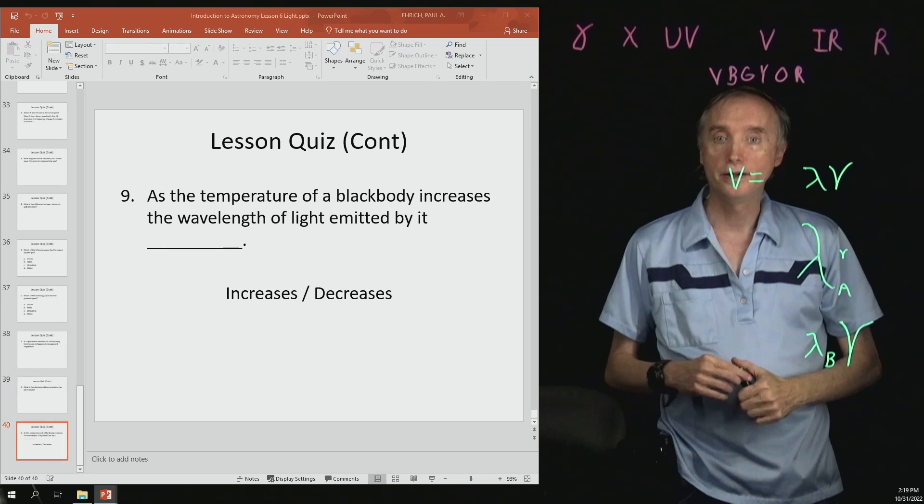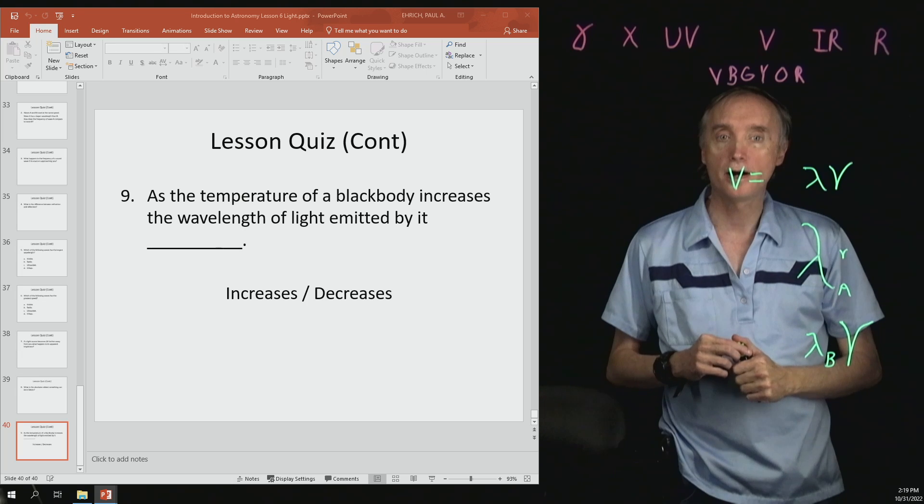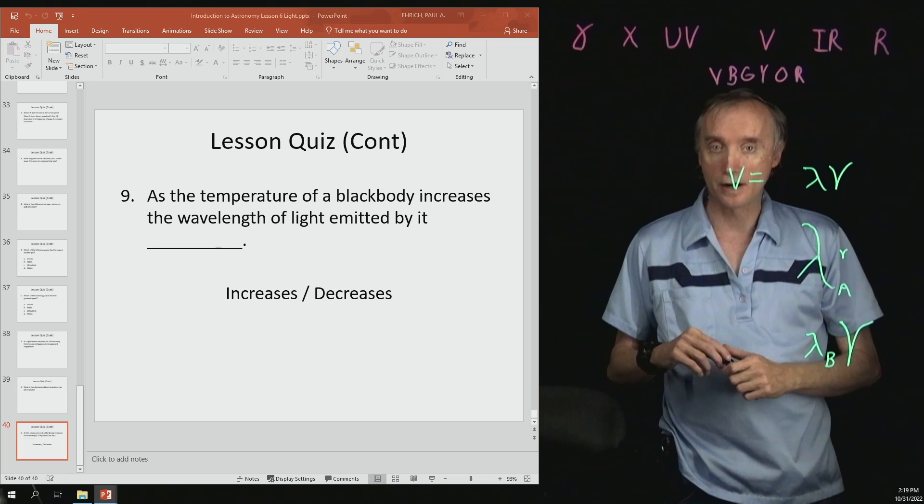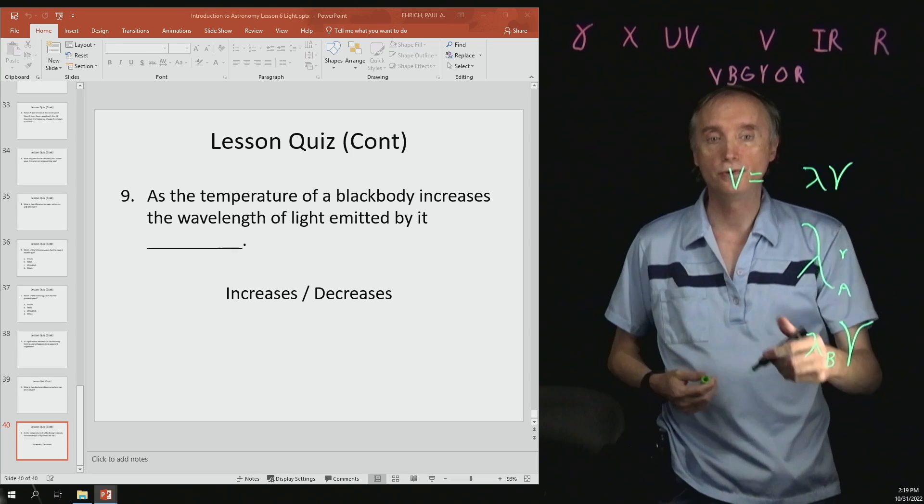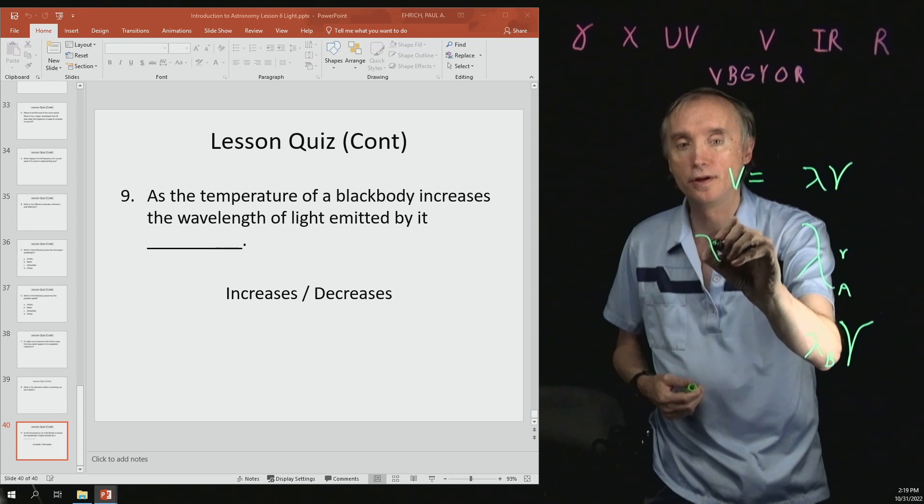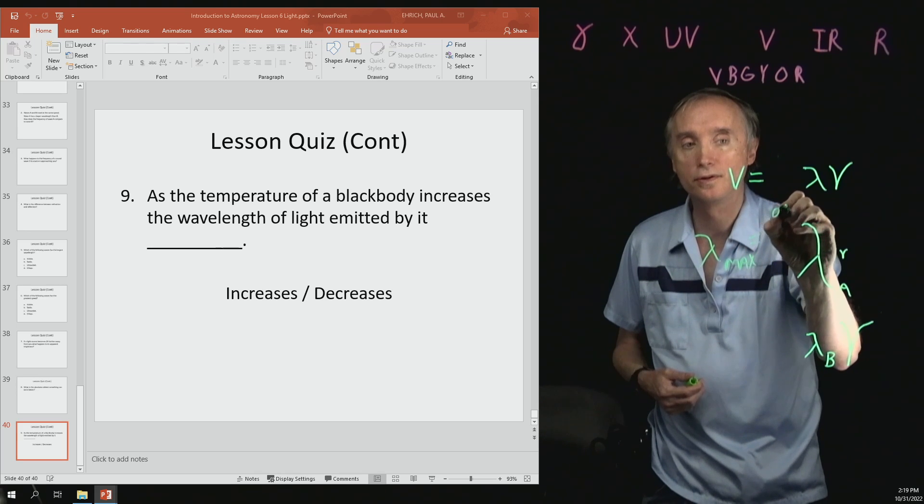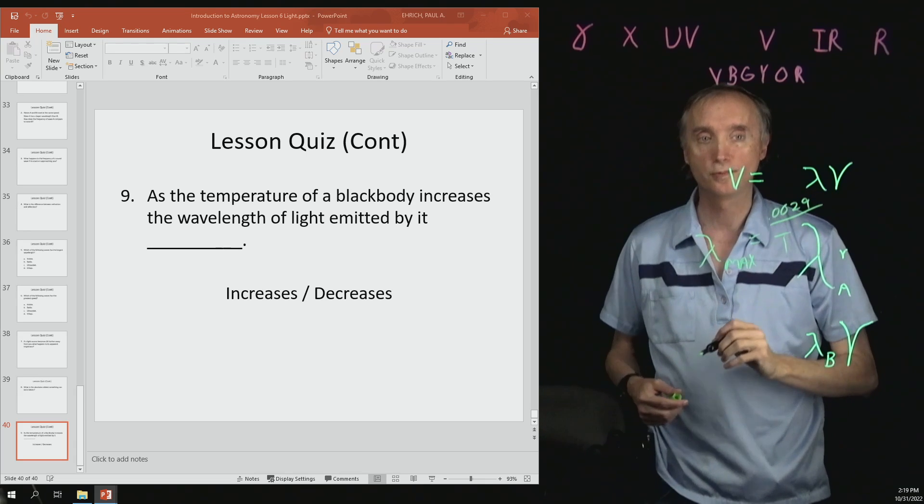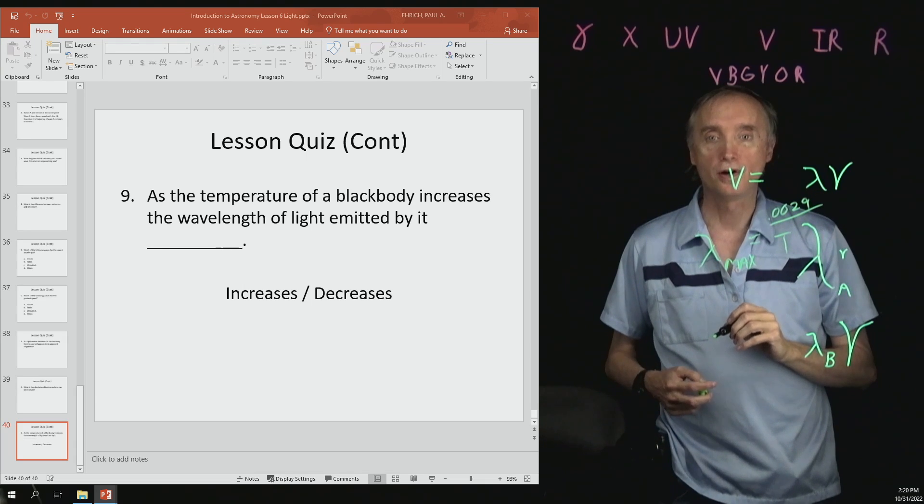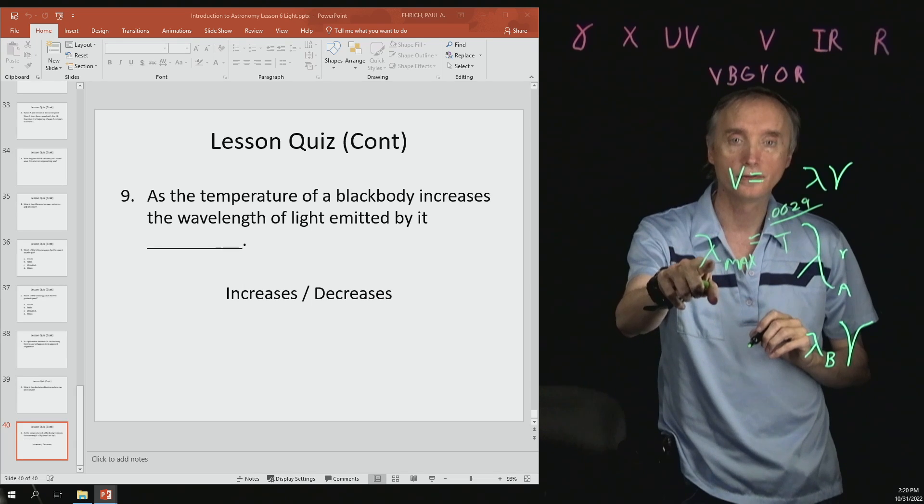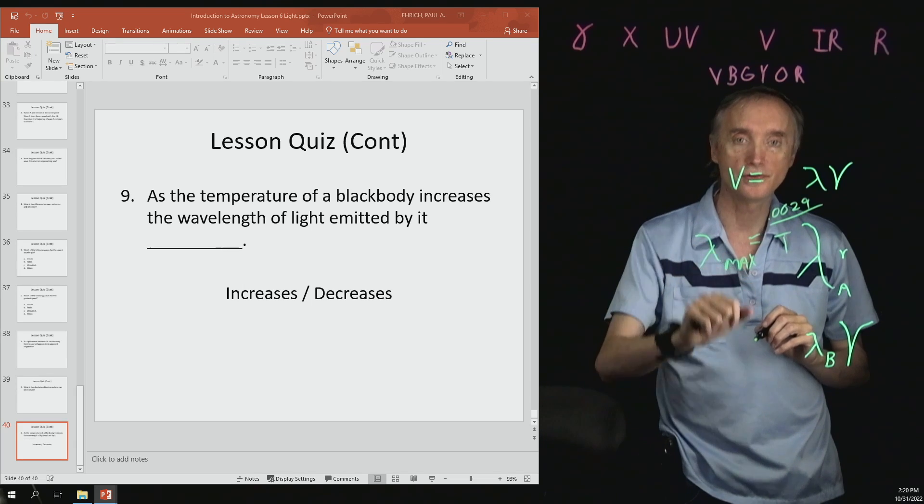And then number nine, as the temperature of a black body increases, the wavelength of light emitted by it does what? So this time we're going to use that the lambda maximum was equal to 0.0029 divided by T. Remember that one? So as the temperature increases, the wavelength decreases.